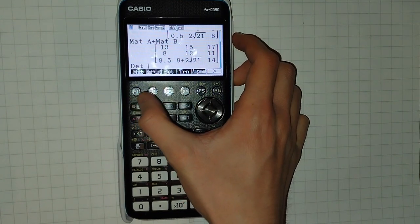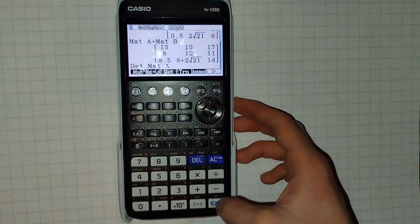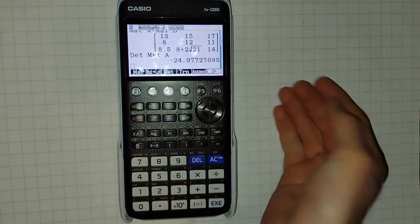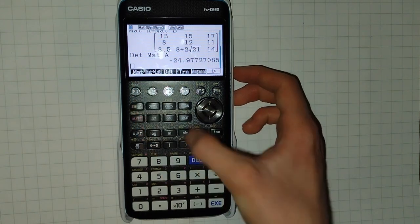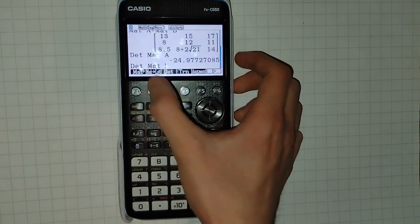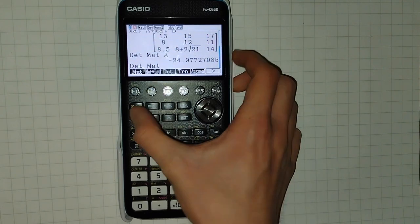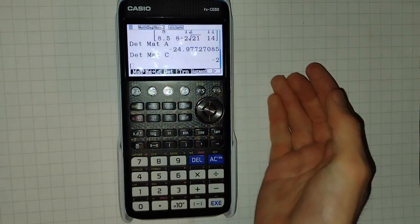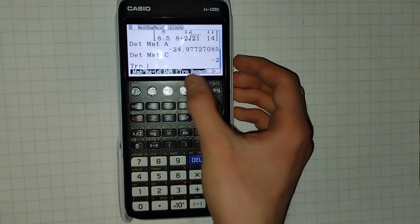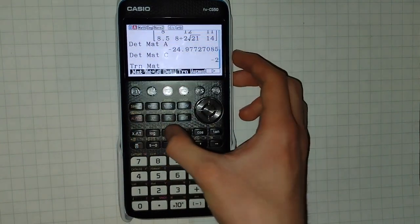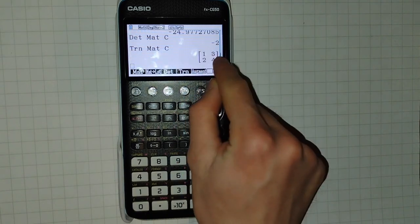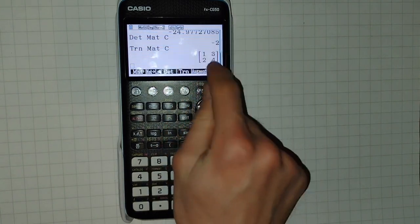Such as finding the determinant. Shift Matrix on a matrix, let's do C. You can transpose matrices, so remember this one was 1, 2, 3, 4. Matrix C transposed, and we can see it's now 1, 3, 2, 4.